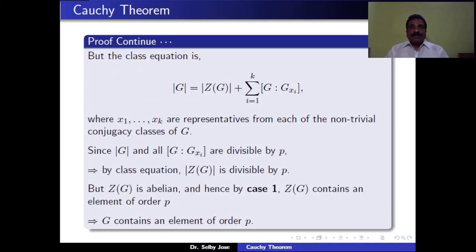The class equation says |G| = |Z(G)| + Σ [G : C_G(X_i)] for representatives X_i from each non-trivial conjugacy class. Since P divides |G| and P divides each index [G : C_G(X_i)], P must divide |Z(G)|. Since Z(G) is abelian, by the first case, Z(G) has an element of order P, and the same element is an element of G of order P. This proves the Cauchy theorem.